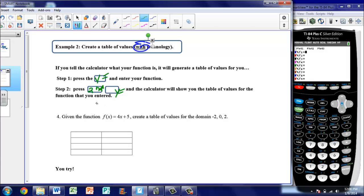So let's take a look at the example. It says, given the function f(x) = 4x + 5, create a table of values for the domain -2, 0, 2. So here's my domain. I know those are my x's, so I'm going to go to my table and say, okay, here's my x's: -2, 0, 2. Now I want to find the y values.